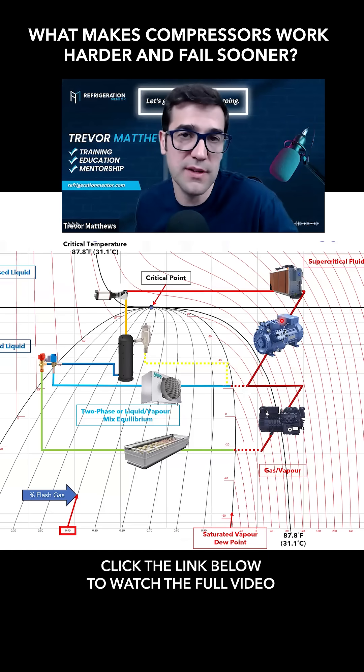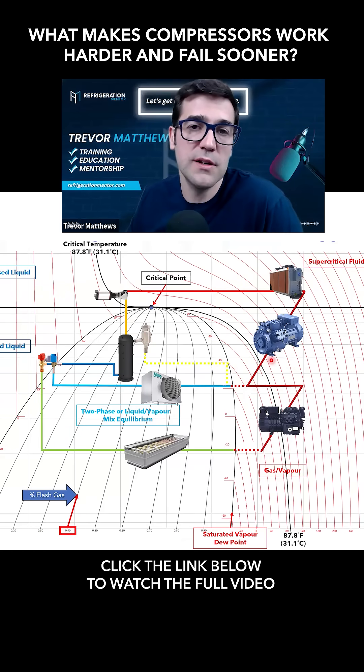Instead of those 10, 15, 20 years, five years or six years getting together because we're working the compressor too hard. And you want to make sure, is it this too much flash gas working? What do we need to do?